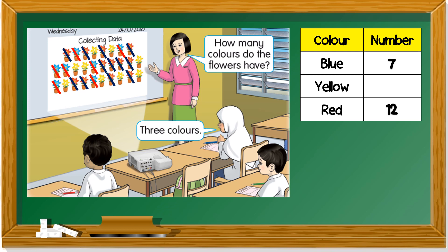Last color, yellow. Yellow, one, two, three, four, five, six, seven, eight, nine. There are nine yellow flowers.